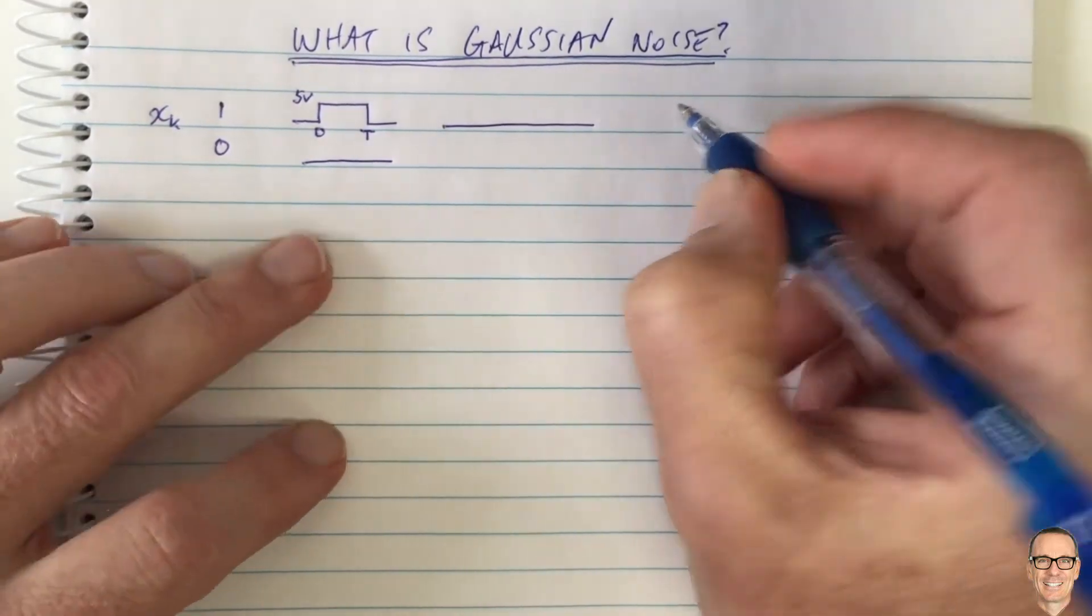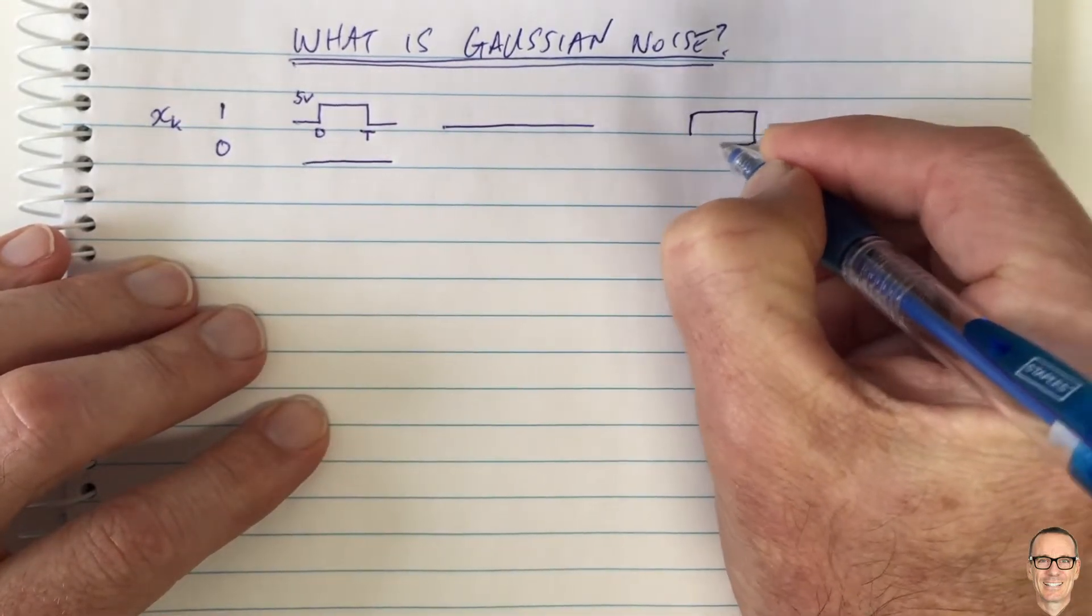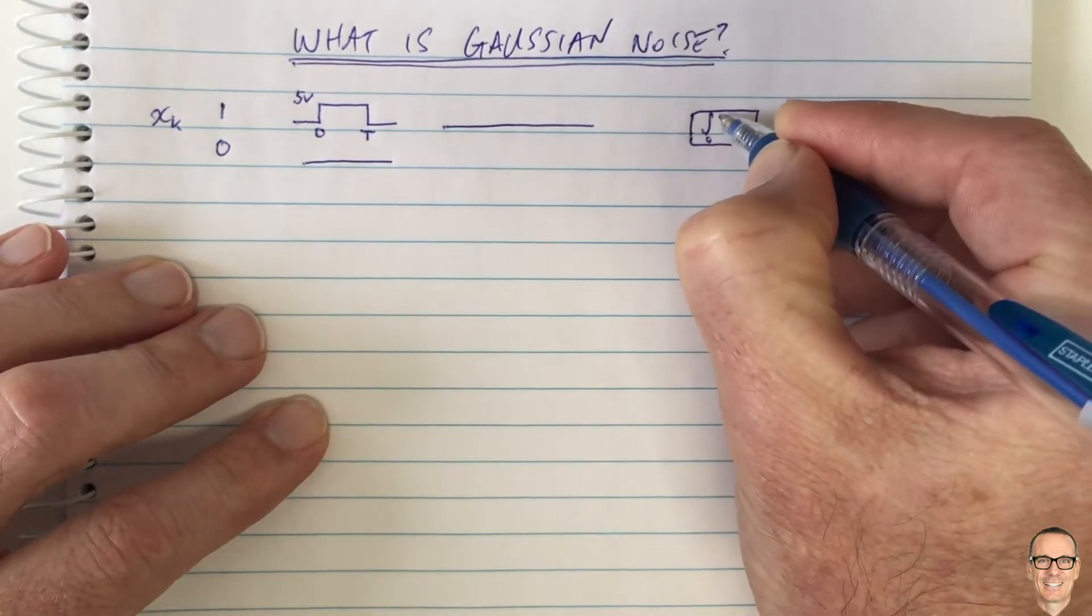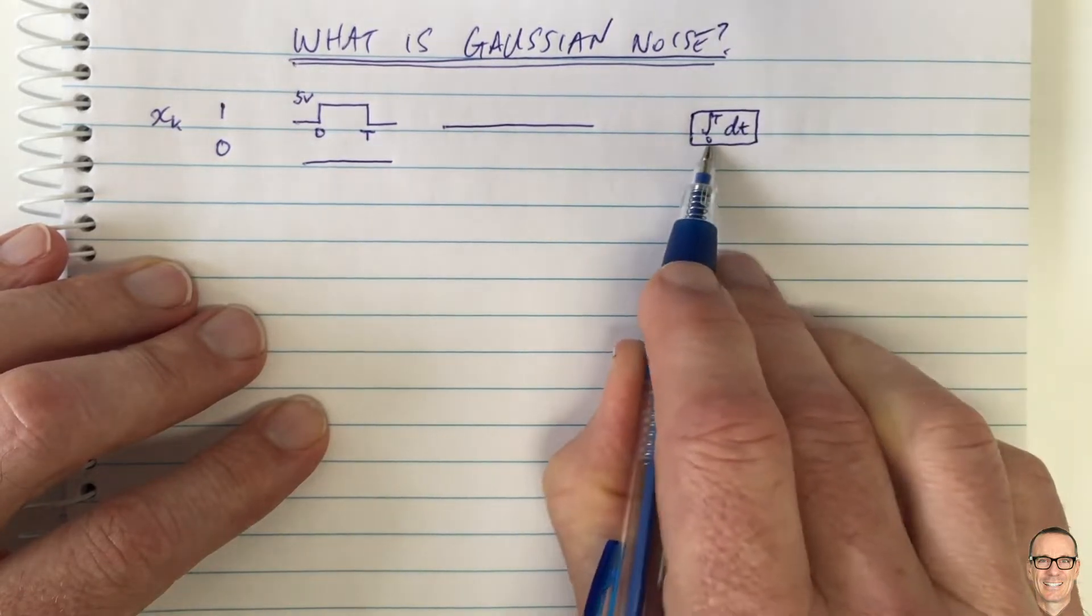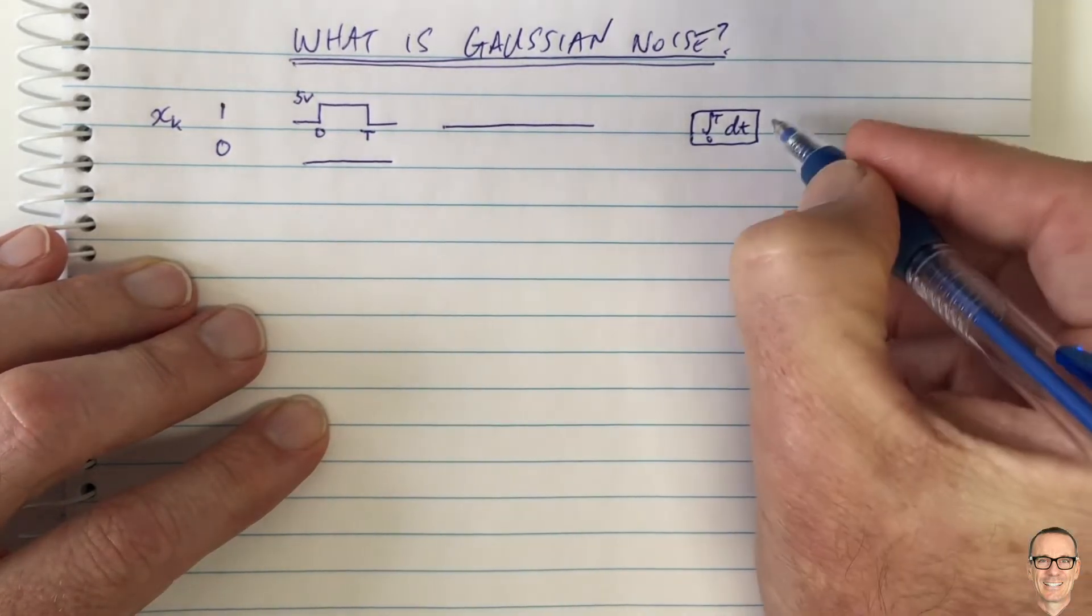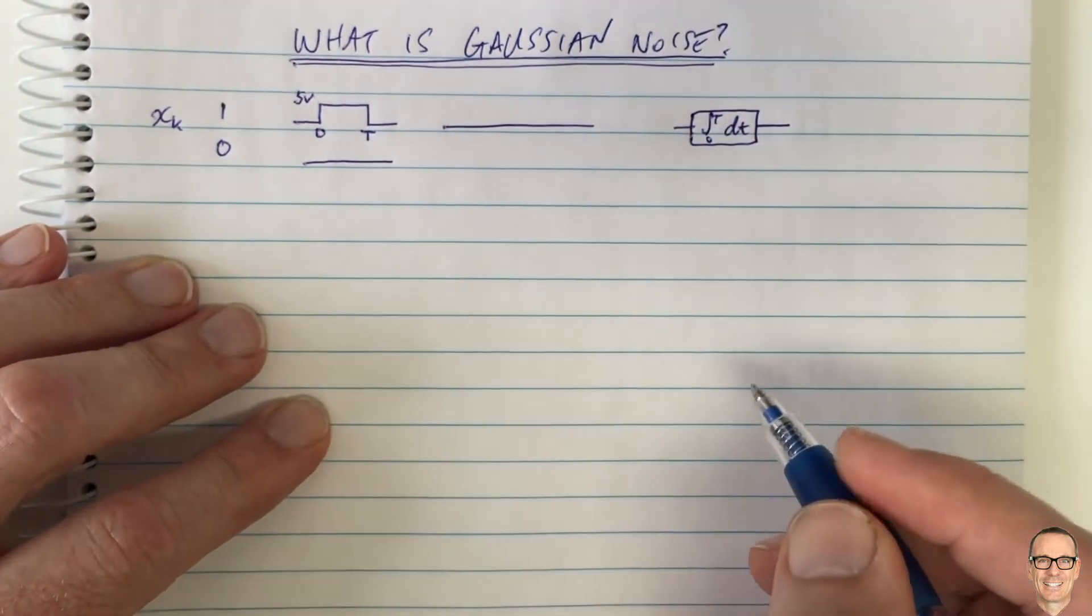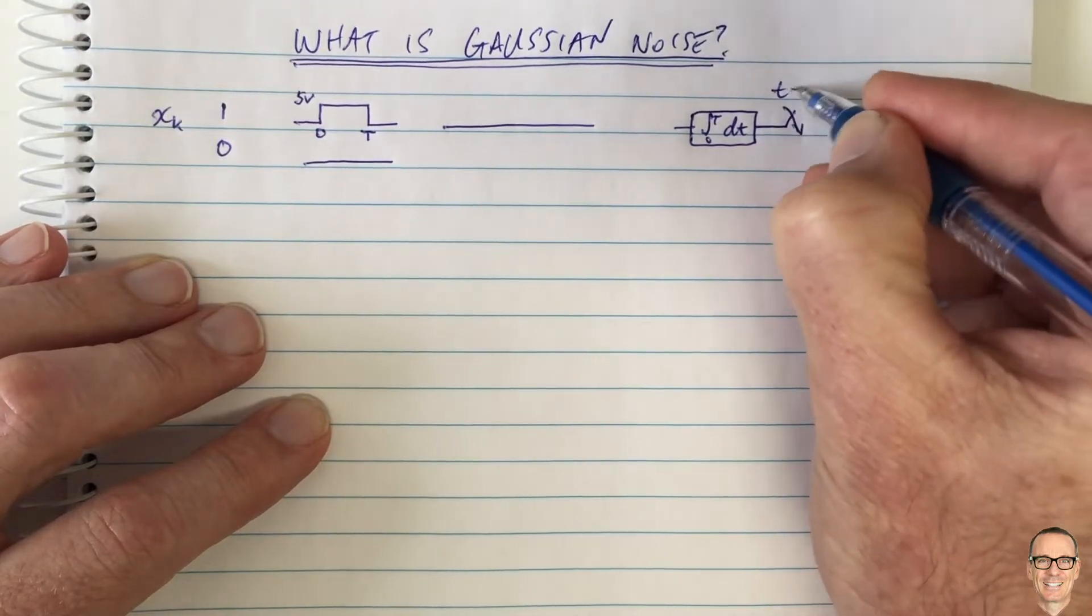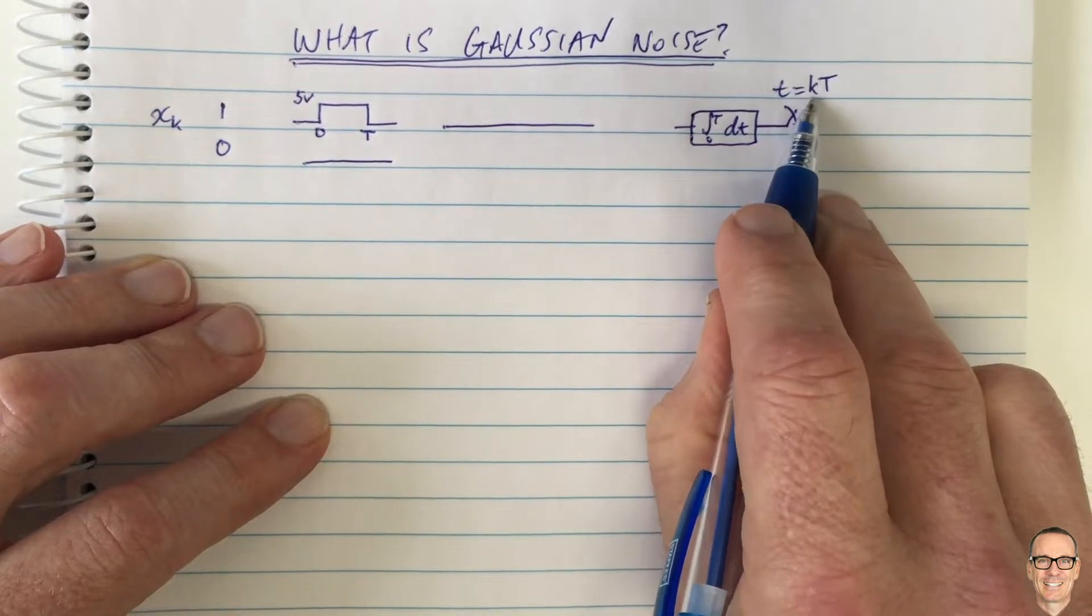At the receiver, you have to collect up all of the energy. So we have an integrator, which in mathematics we draw as this integration sign, which we add up the energy that's coming in between 0 and t. So we add up this energy and collect it at the receiver, and then we make a sample at times kt. So in this case, when k equals 1,